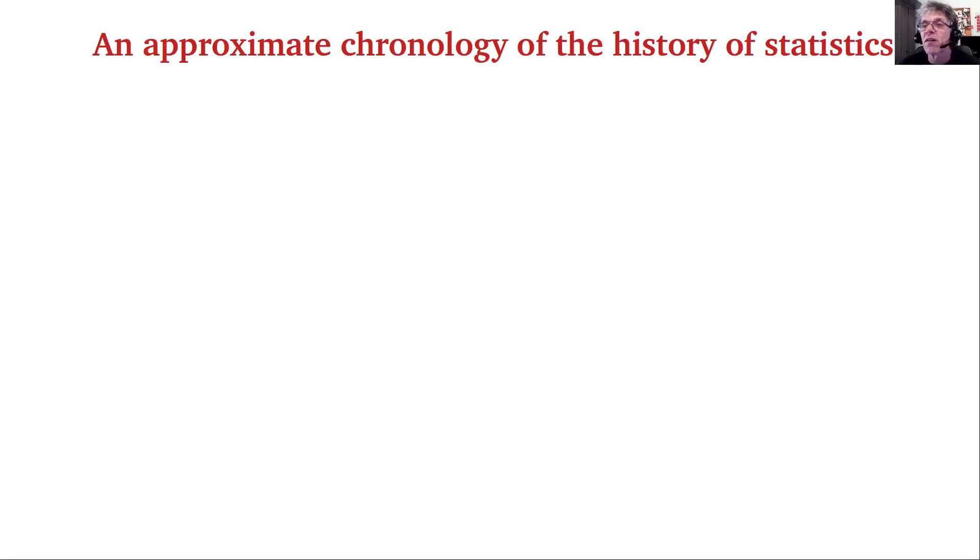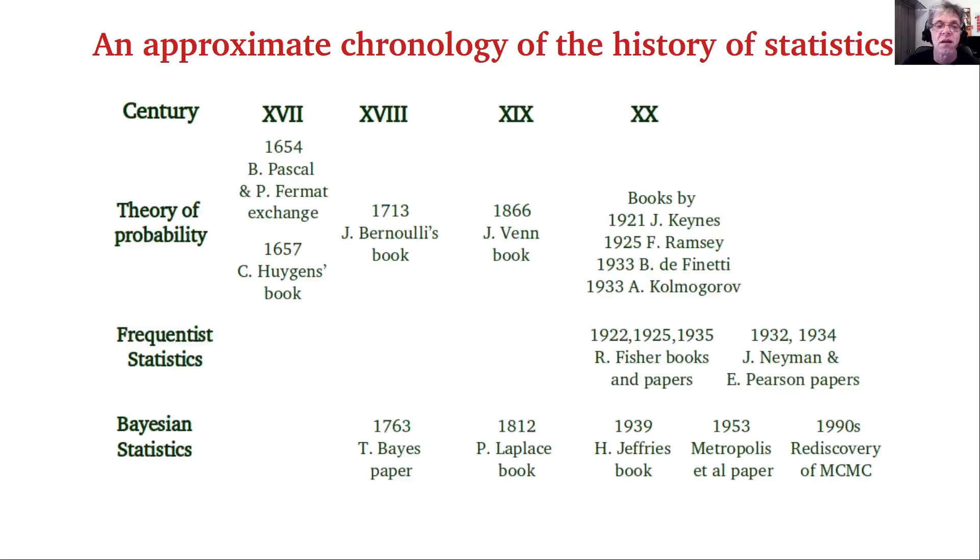An approximate chronology of the history of statistics is shown in the next chart, showing three rows involving the theory of probability with the three events we already mentioned. I add the important book by John Venn, who from a strong positivist viewpoint was very interested in developing a frequency-based view of probability, and a few other books in the 20th century by two British mathematicians, an Italian probabilist, and the Russian mathematician, the great Alexei Kolmogorov. Frequentist statistics actually arose in the 1920s and 30s out of the monumental work of Ronald Fisher and out of the polemics that Fisher sustained with Jerzy Neyman and Egon Pearson in the 1930s.